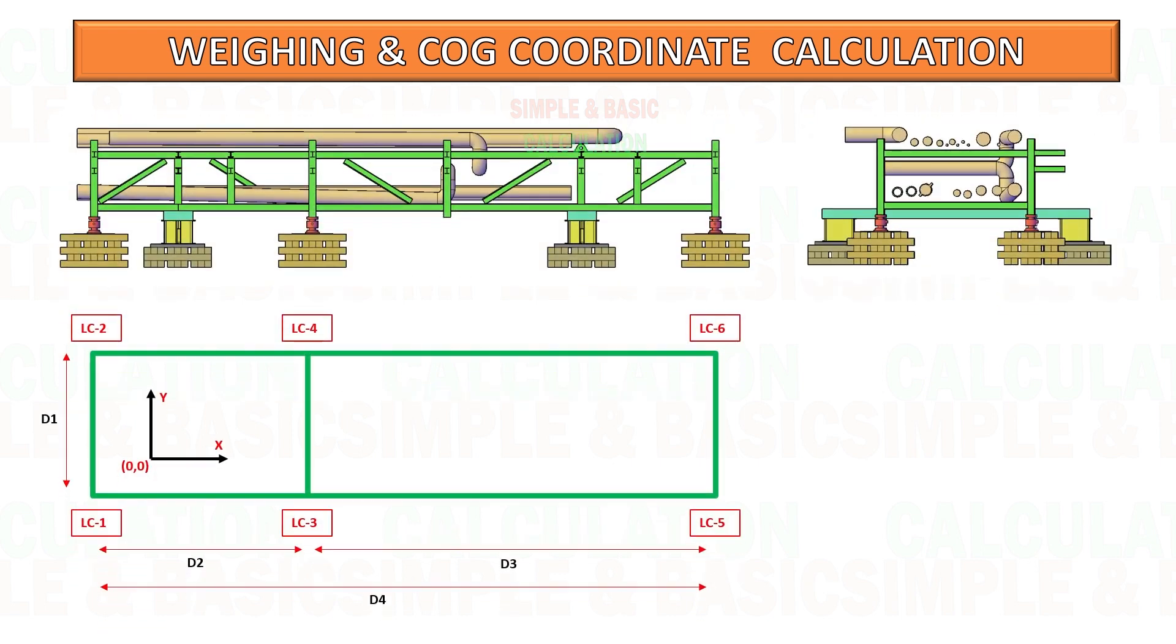Based on below mentioned detail, determine the center of gravity of the cargo. D1 is equal to 4.5 meter, D2 is equal to 5 meter, D3 is equal to 7 meter.